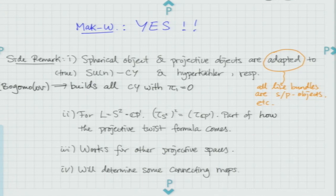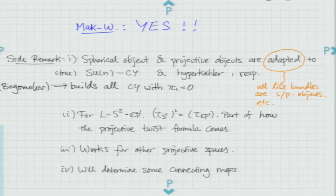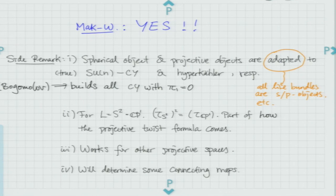What we prove is that this is really a mirror: if you copy the expression that Huybrechts-Thomas gave and translate it naively to symplectic geometry, that's exactly the effect of the Lagrangian CP^n Dehn twist. We also prove it for Lagrangian RP^n twist and HP^n twist, and some other Lagrangians with certain special properties. Some side remarks: spherical objects and projective objects are not sporadic ideas. Spherical objects are particularly adapted to the so-called SU(n) Calabi-Yau, while projective twists are particularly adapted to hyperkähler manifolds.